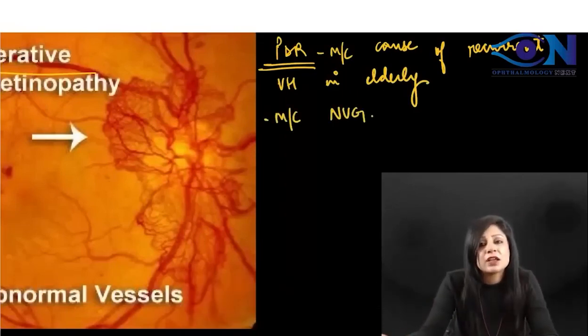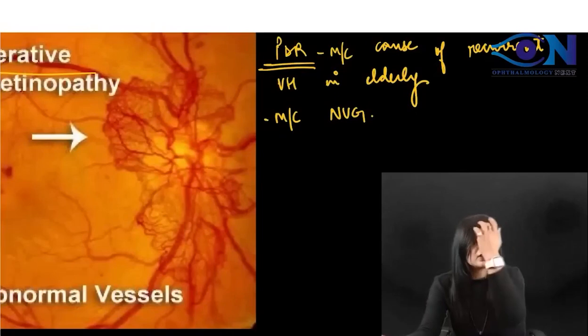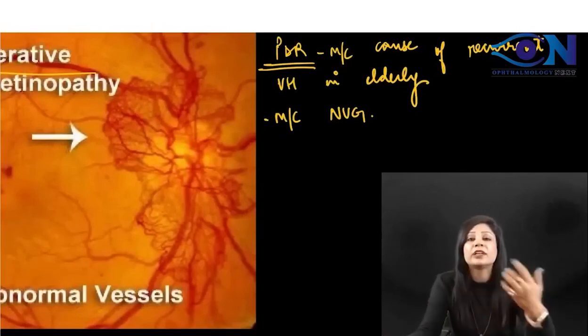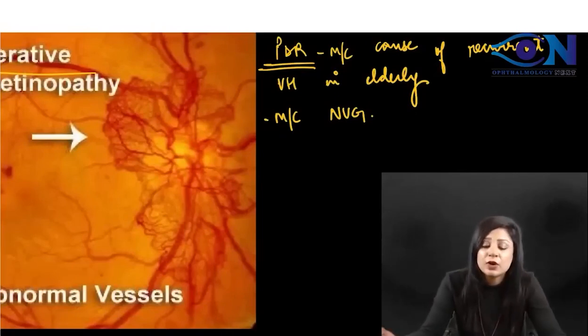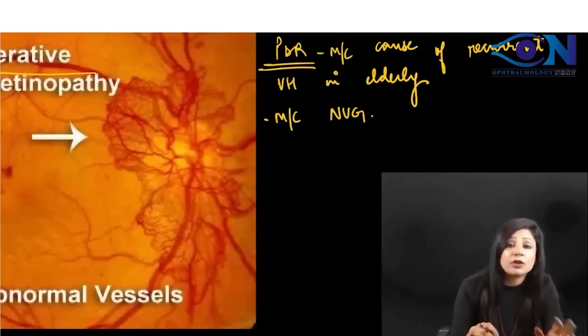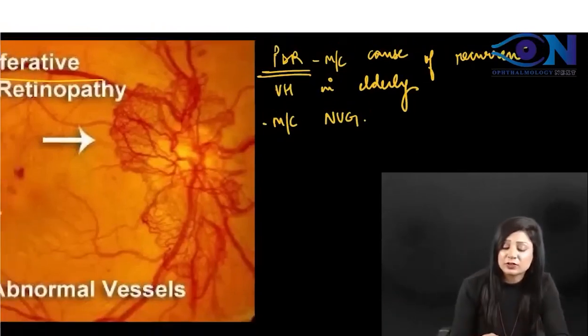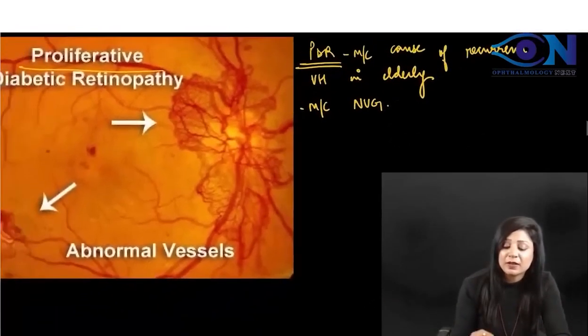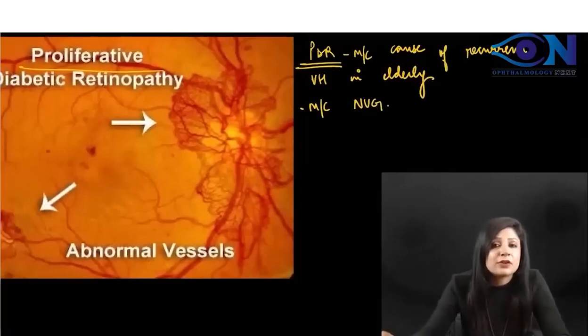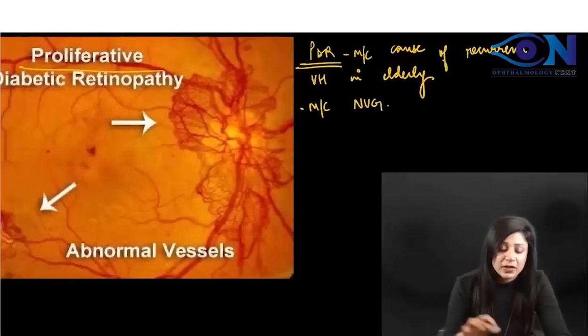Don't confuse it with 100-day glaucoma. 100-day glaucoma is found only in CRVO, but overall, neovascular glaucoma most commonly is found in PDR.